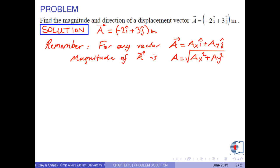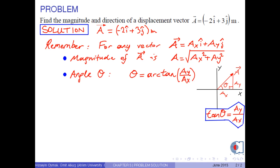An angle theta from the positive x-axis to vector a is found by the formula: theta equals arctangent of ay over ax.